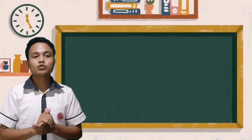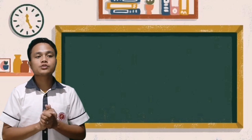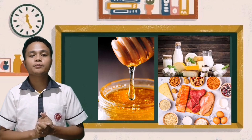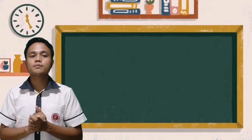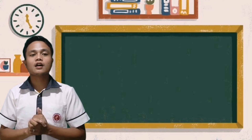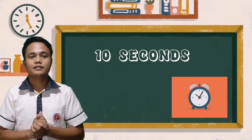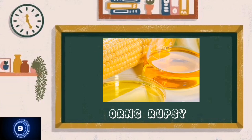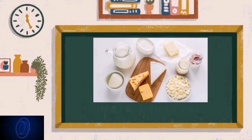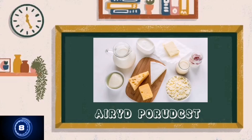I prepared an activity for you to begin our new lesson. I'm going to show you some pictures and jumbled letters about our new topic. You've been given the duty of arranging those words based on the images. Each right answer has a time limit of 10 seconds.